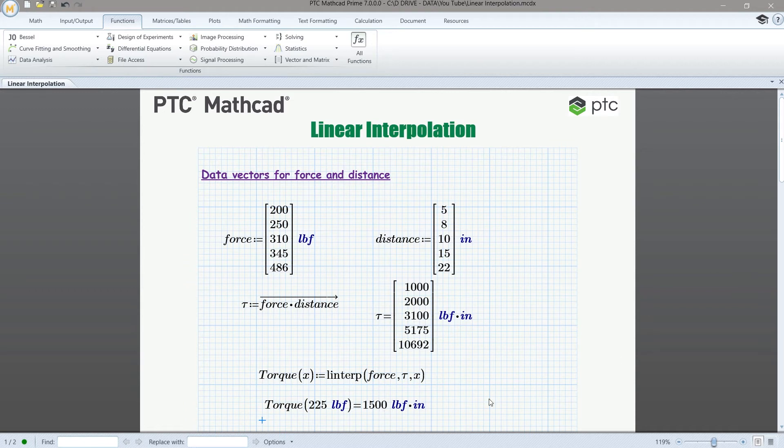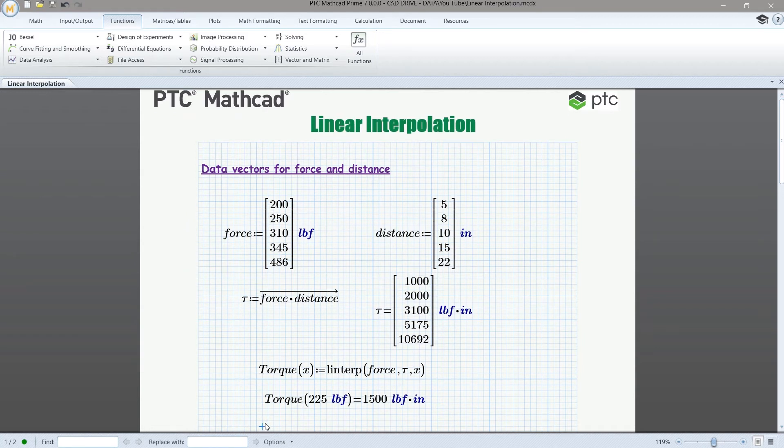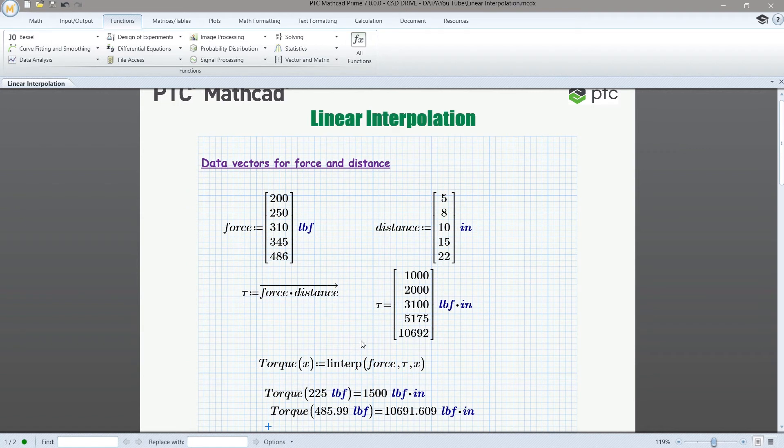And so we want to convert those units to pound force times inches. And we know we can expect our interpolation to land halfway between the first two entries on the torque vector. So if we go down here to the torque vector, exactly halfway between these two entries is 1500. And so it looks like our interpolated torque is right on point there. So let's do one more interpolation.